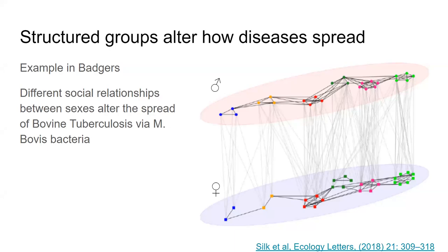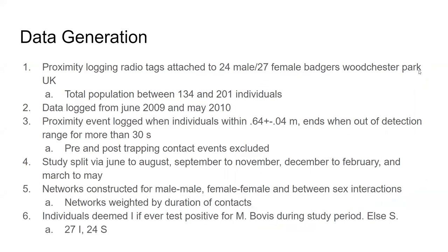The focus here is to pick out the variable of sex, look at how structuring the networks by this variable changes seasonally, and any impact it has on disease spread through testing for this bovine TB germ. The data was generated using proximity tags on 24 male and 27 female badgers in a UK population, with a total population between 134 to 201 individuals. Data was logged from June 2009 to May 2010.